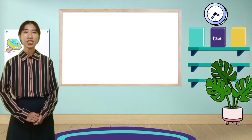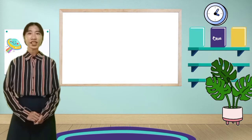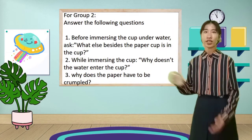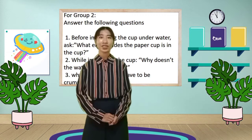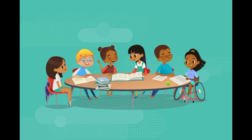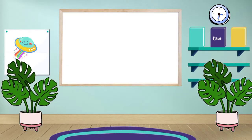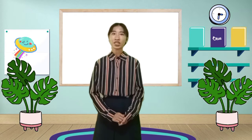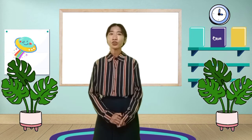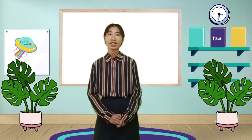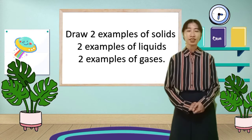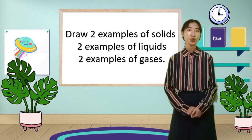Pass the paper around the classroom, allowing the students to check whether it is wet or dry. I will give each group 15 minutes to perform the experiment. These are the questions to be answered by group one, and these are the questions to be answered by group two. You can start now. Good job, class. You really did well in our experiment for today. So now, we are going to have another activity for you to really understand, differentiate, and identify the phases of matter. In your activity, we are going to draw two examples of solids, two examples of liquids, and two examples of gases.